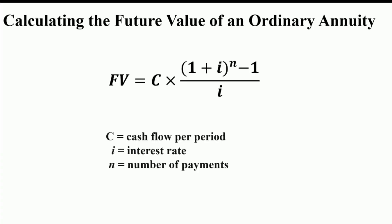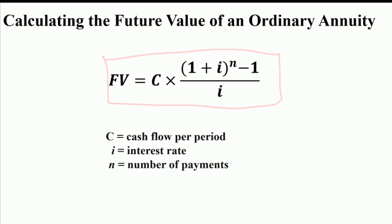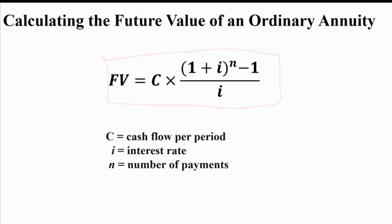The formula for calculating the future value of an ordinary annuity is: FV = C × [(1 + i)^n − 1] / i, where C is the cash flow per period, i is the rate of interest, and n is the number of periods you are going to deposit. You can use this formula for calculating the future value of an ordinary annuity.